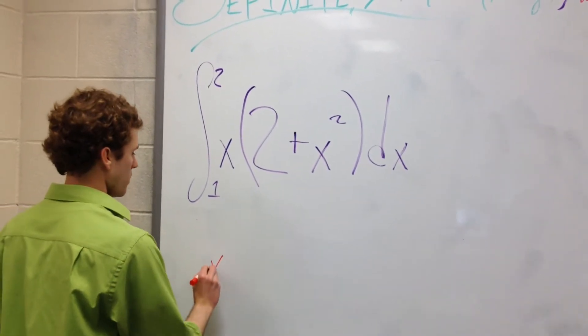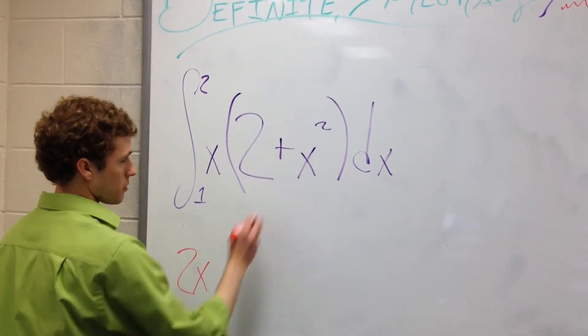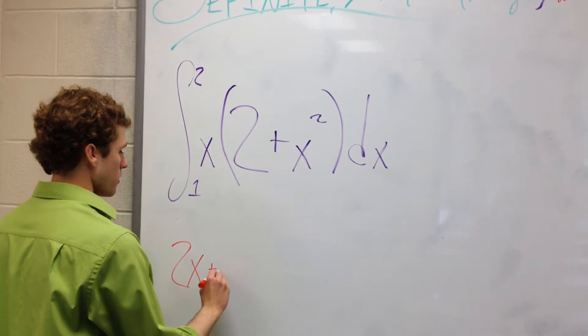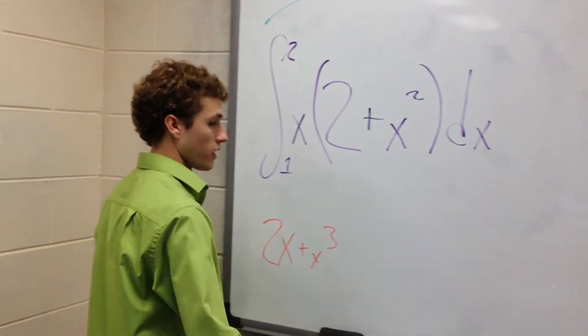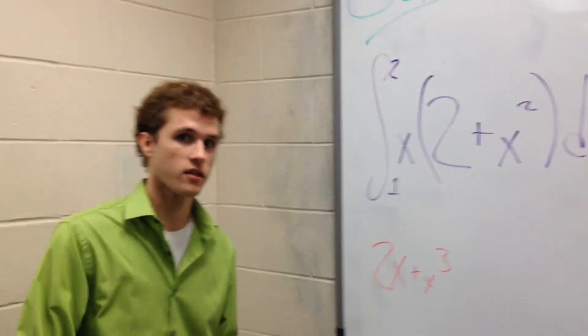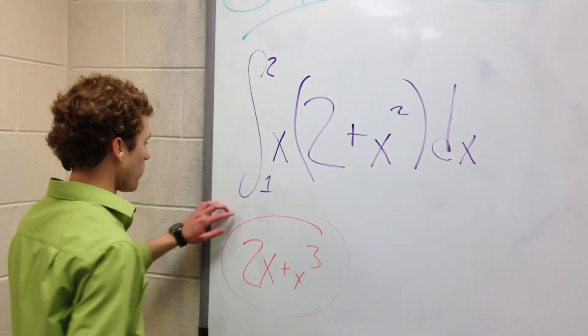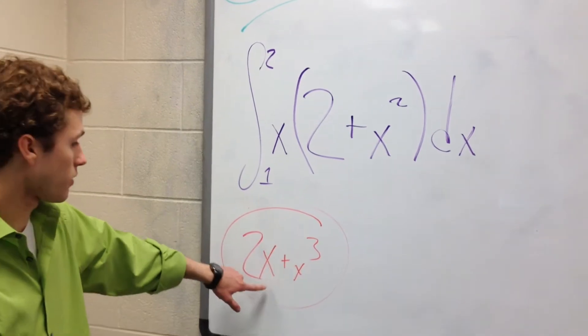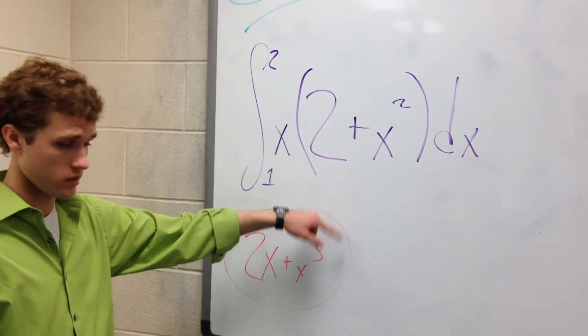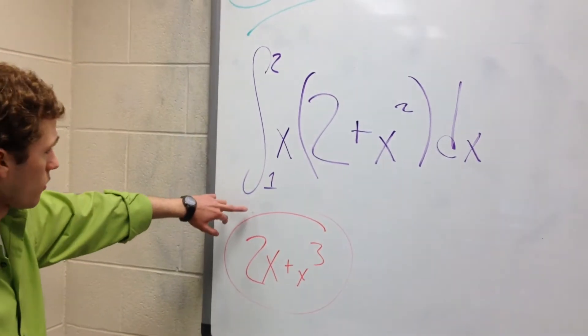So instead of that, let's just go ahead and distribute this like we said. So 2 times x is 2x plus x times x squared. This is just x cubed. Now, don't make the mistake and just say, okay, got my antiderivative. No, all we've done is we have, we've combined this into one thing. Now we need to take the antiderivative of this because this is equal to this.